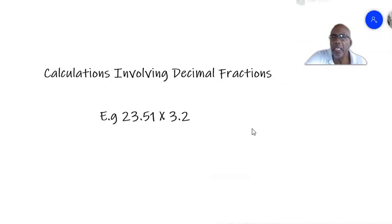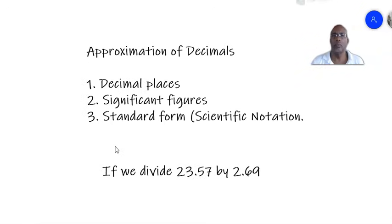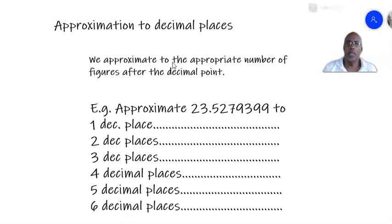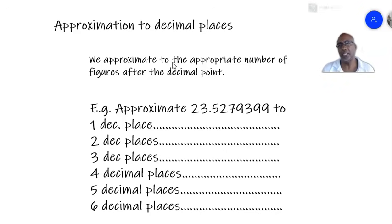So we have to look at how we approximate decimal fractions in order to give an answer to an appropriate number of significant figures — and that is what we will be doing today. There are three ways you will normally be required to know about approximation of decimals. Number one: decimal places. Number two: significant figures. And number three: standard form, or scientific notation. So let us look at approximation to decimal places first. When you approximate to decimal places, we approximate to the appropriate number of figures after the decimal point.